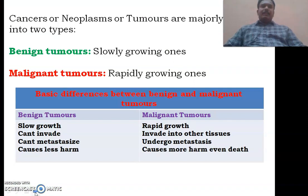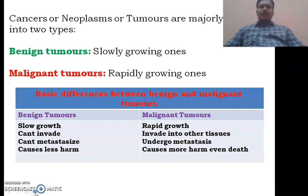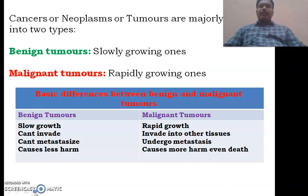Coming to the classification of tumors, these tumors or cancers are broadly classified into two types: benign tumors and malignant tumors. Benign tumors are slowly growing ones and malignant tumors are rapidly growing ones. Benign tumors cannot invade into neighboring tissues, but malignant tumors can. Benign tumors cannot metastasize — they would not spread from one place to another — but malignant tumors will. Benign tumors will not cause much harm to our body, but malignant tumors will cause more harm and sometimes even death.